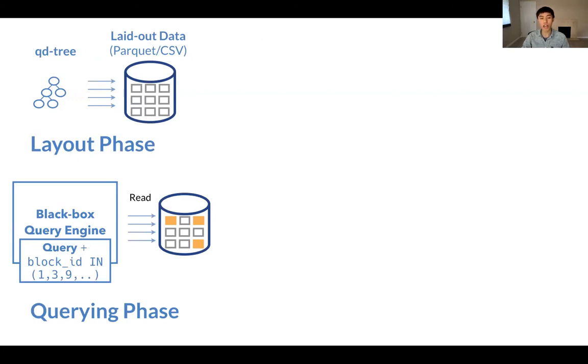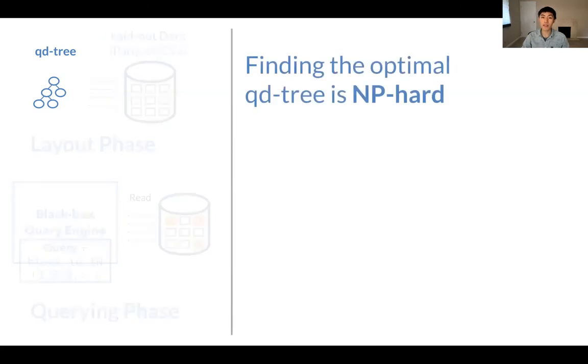We haven't talked about how to actually construct a QD-tree. It turns out that finding the optimal QD-tree for a given workload and dataset pair is an NP-hard combinatorial problem. Now, classically, people use dynamic programming to solve combinatorial problems, but unfortunately, it is ineffective for large search spaces, such as the case in our problem here.